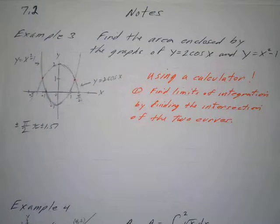Okay, some more examples from section 7.2. This is example number three, and this is in your book, although I may do it somewhat differently. I'll find the area enclosed by the graphs of y equals 2 cosine of x and y equals x squared minus 1.